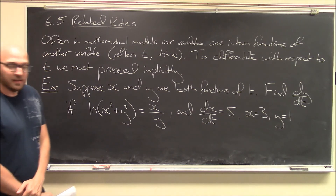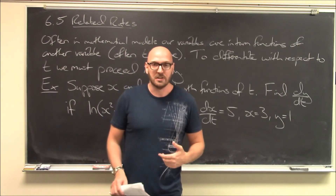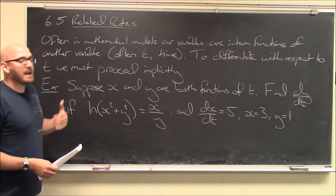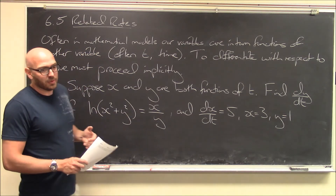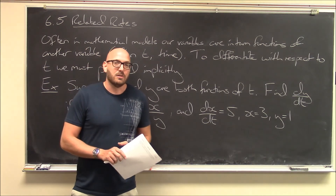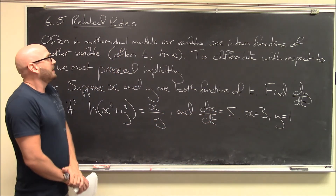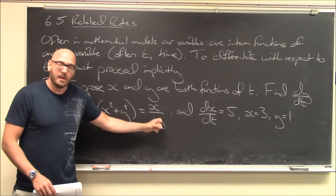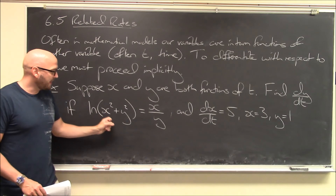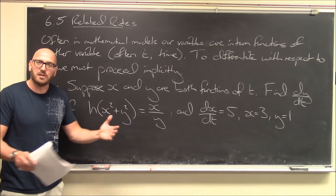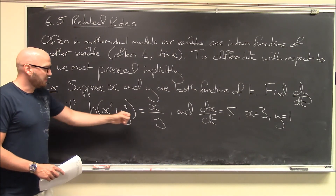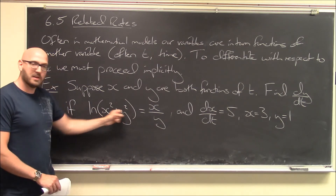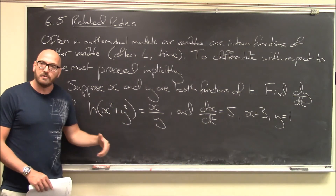The idea here is we're going to go back to implicit differentiation — this is why we did implicit differentiation before this section. Usually in mathematical models, you'll end up with variables that are in turn variables of other variables. In this first example, we've got an equation involving x and y. But x is actually dependent on another variable t, usually thought of as time, and so is y. So as time changes, x and y actually change — they're functions of some other variable t.